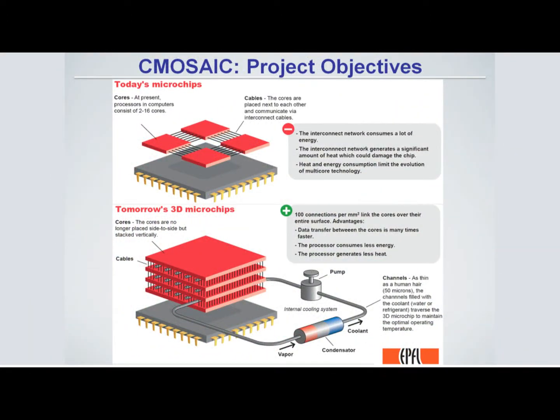The C-Mosaic title comes from CMOS, the existing technology for making integrated circuits in a computer. The second part, Mosaic, represents the three-dimensional aspect of such an architecture. The idea is how to combine CMOS technology in three dimensions to make a 3D computer chip, as opposed to current two-dimensional chips. There are various challenges involved.